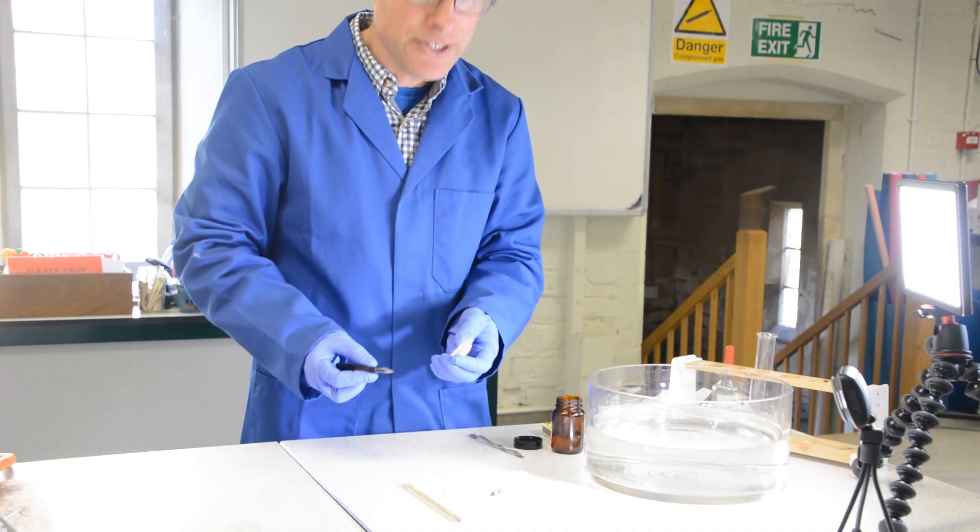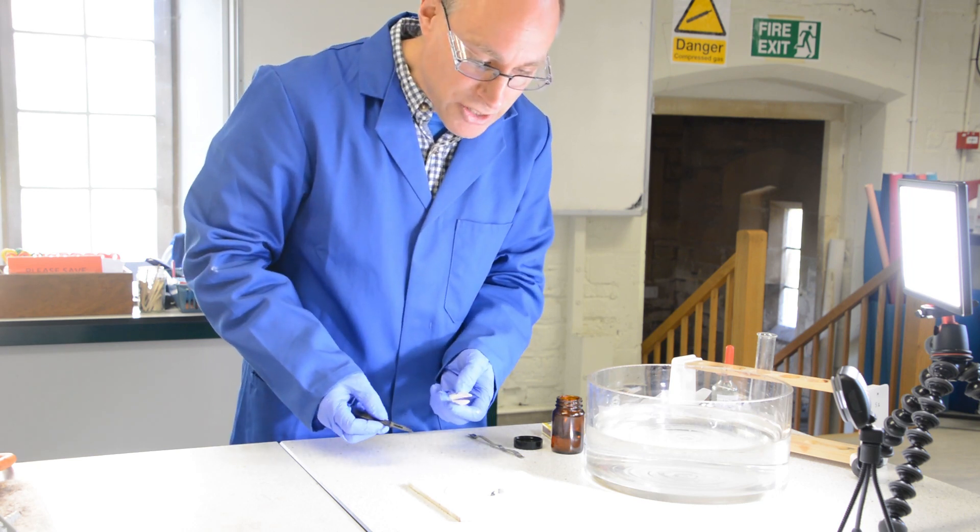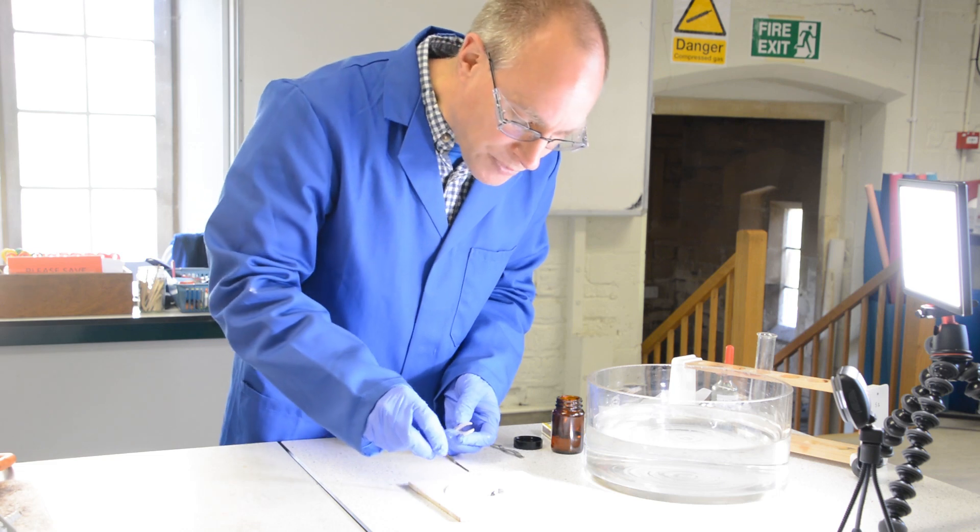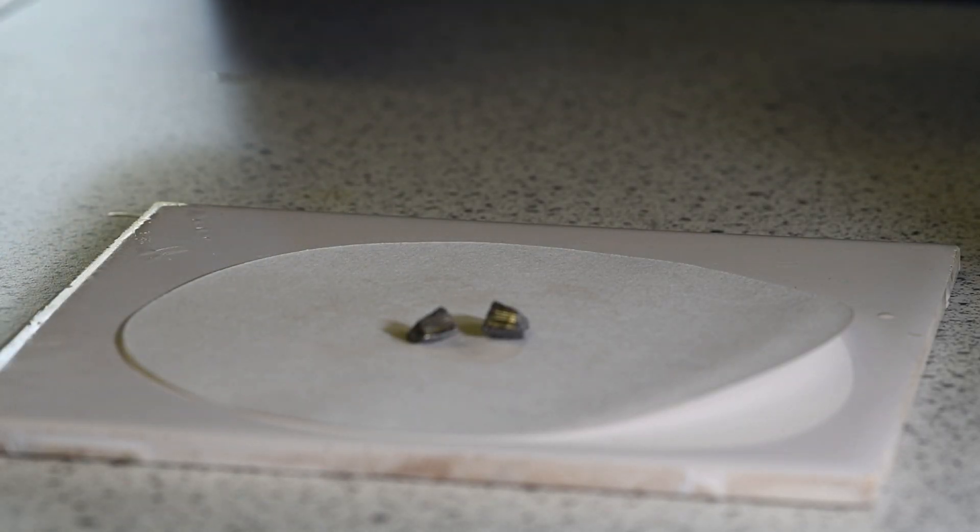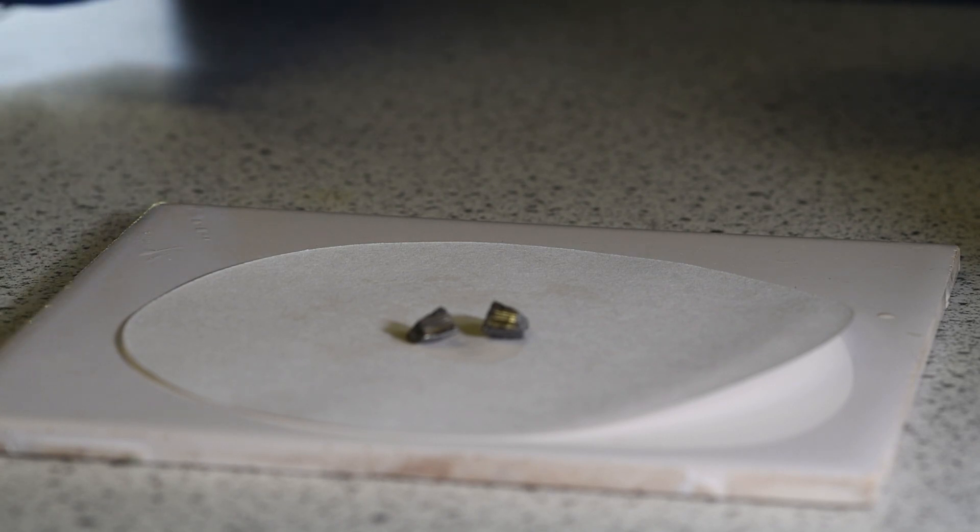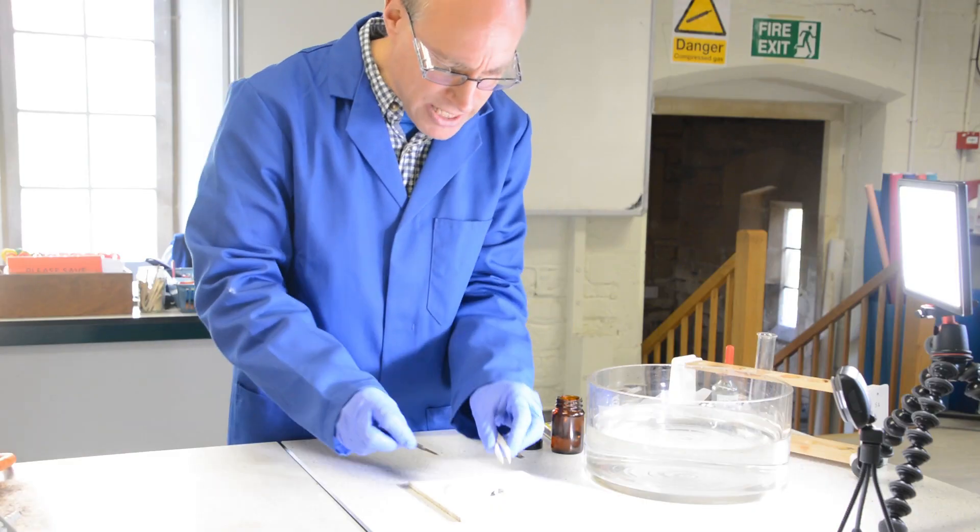So as you'd expect, lithium as a metal, when it's freshly cut, does go shiny. That cut surface there will start to tarnish very slowly as the lithium reacts with oxygen in the air. So that's lithium.